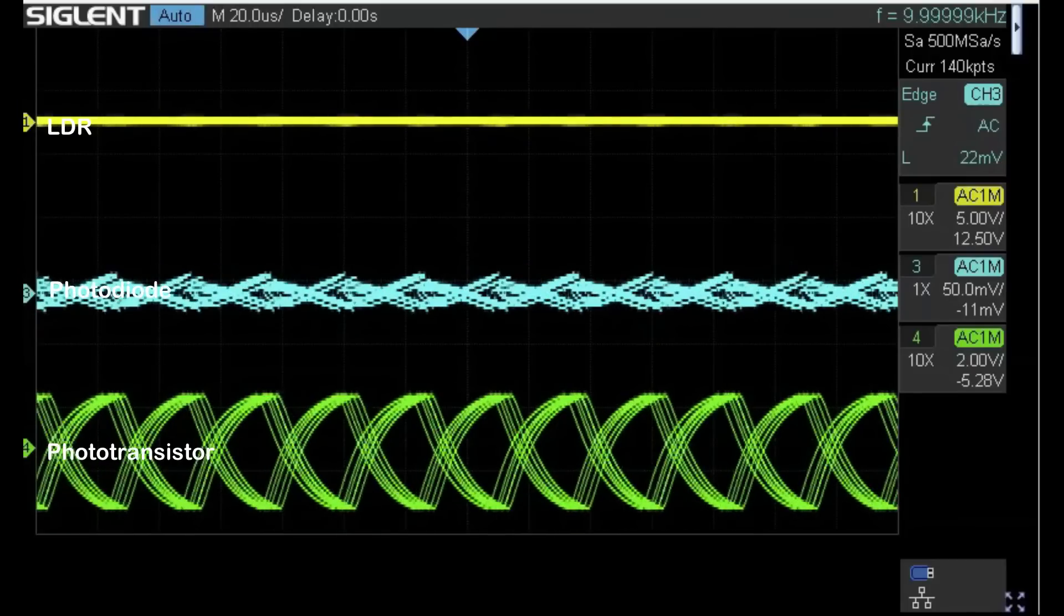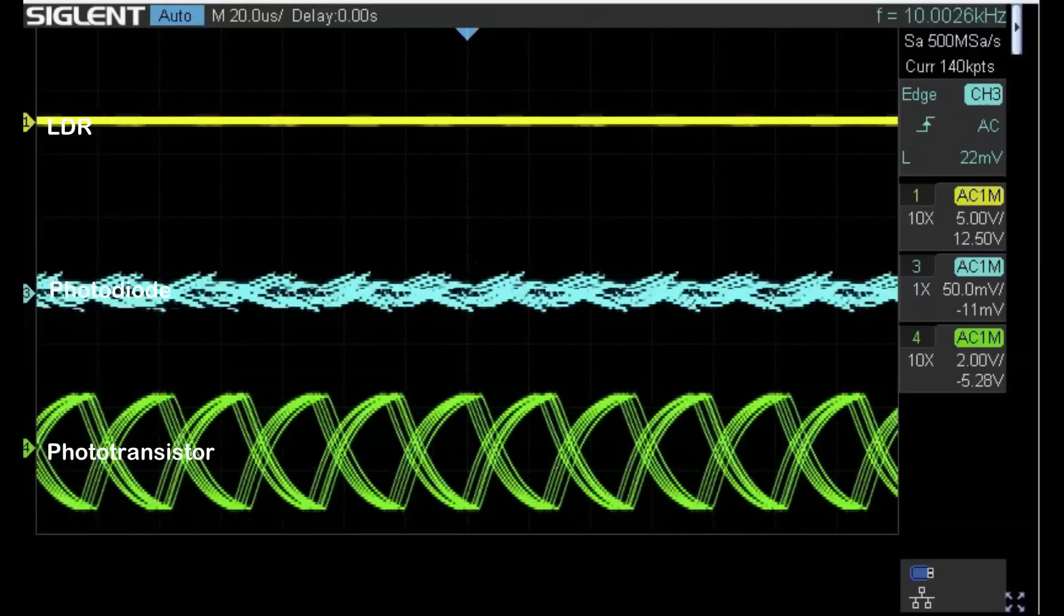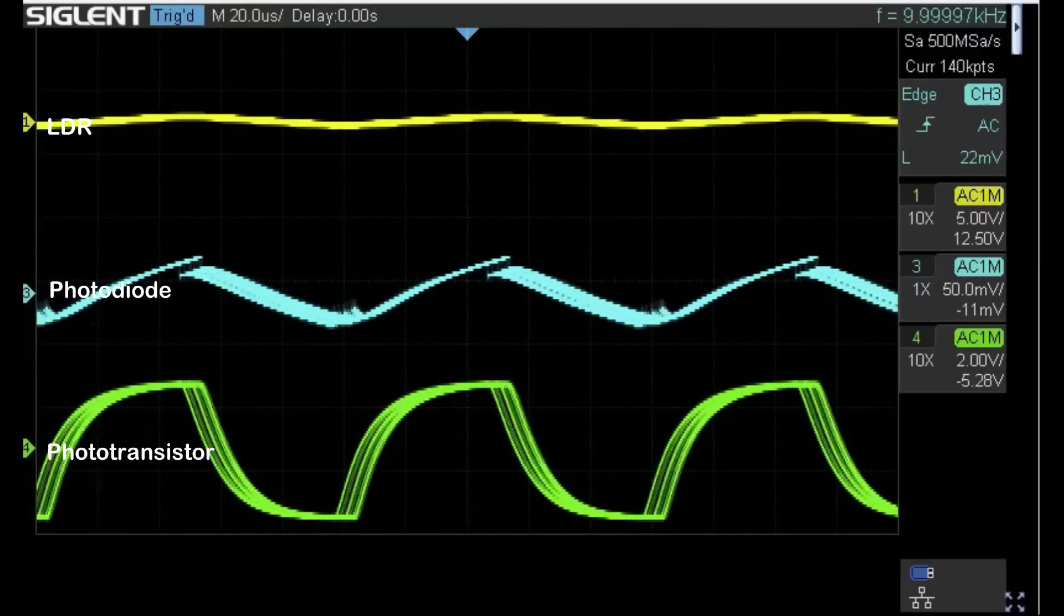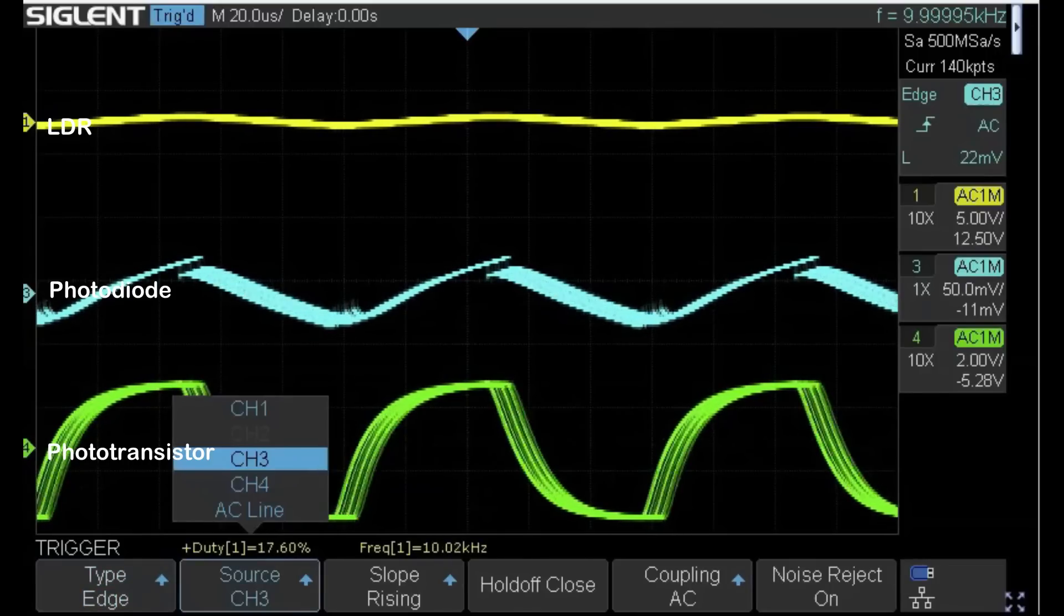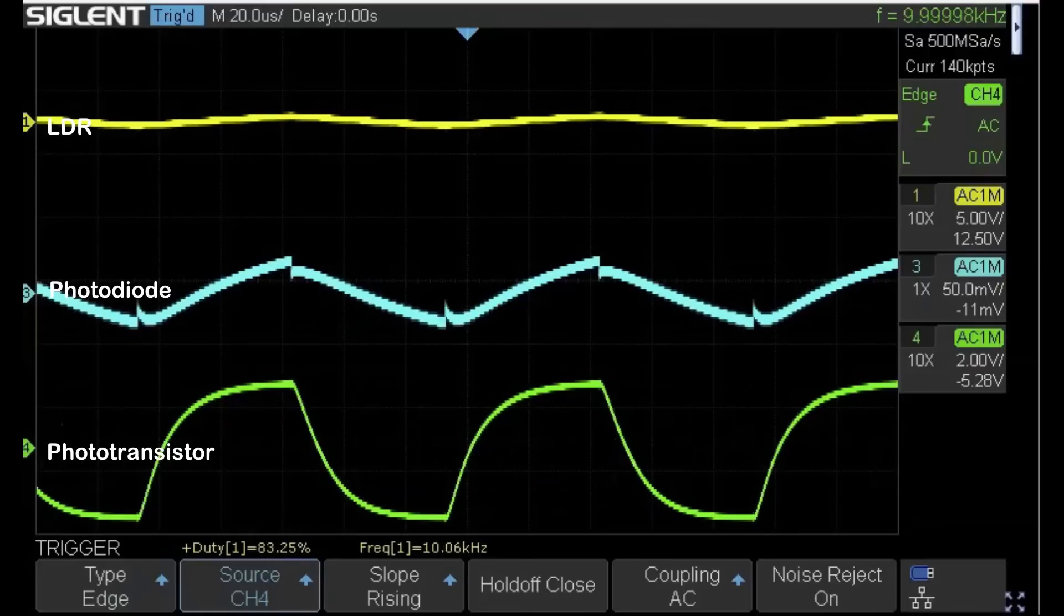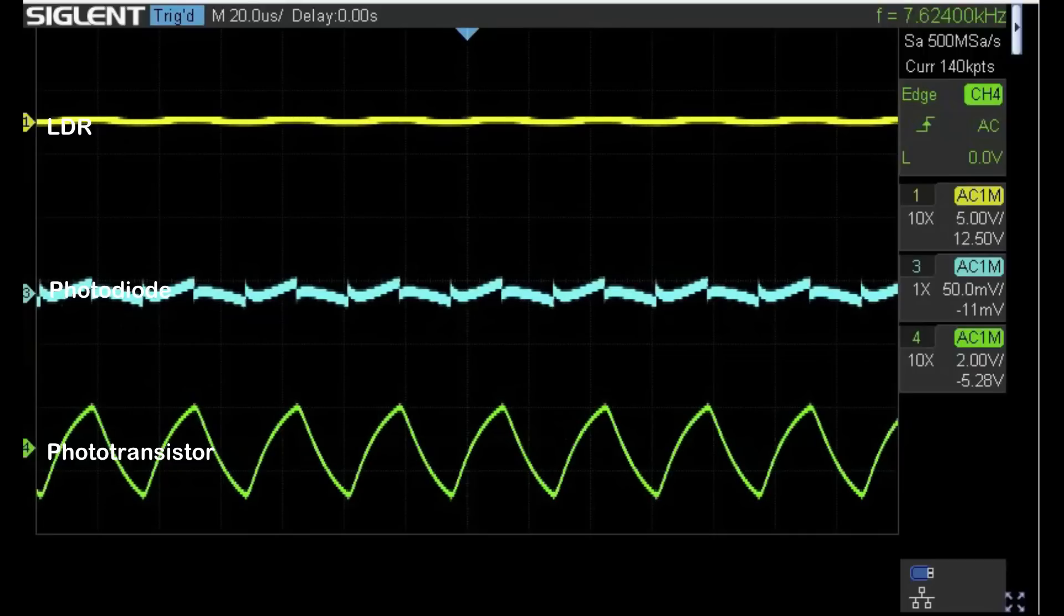If I go up in 10 kilohertz steps, at 20 kilohertz we've started to lose lock with the synchro, so we'll change the source to channel four. Now we're at 30 kilohertz and what we've got coming off the phototransistor is almost a triangle wave. The LDR is long gone, but the photodiode is not making terribly good account of itself anymore. Those were interesting findings.